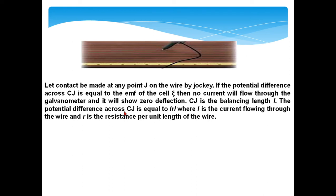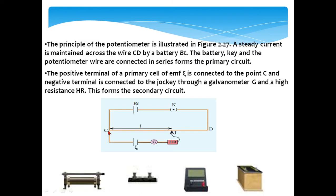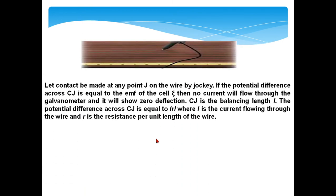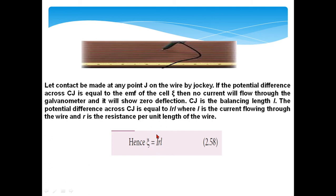The potential difference across CJ is equal to iRl, where i is the current flowing through the wire, R is the resistance per unit length, and l is the balancing length. So EMF psi equals iRl. This is a very important formula for the potentiometer, and many objective questions are asked from this formula.